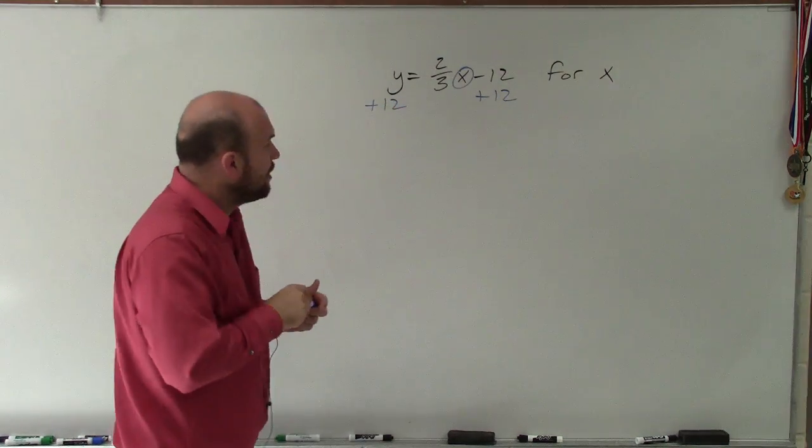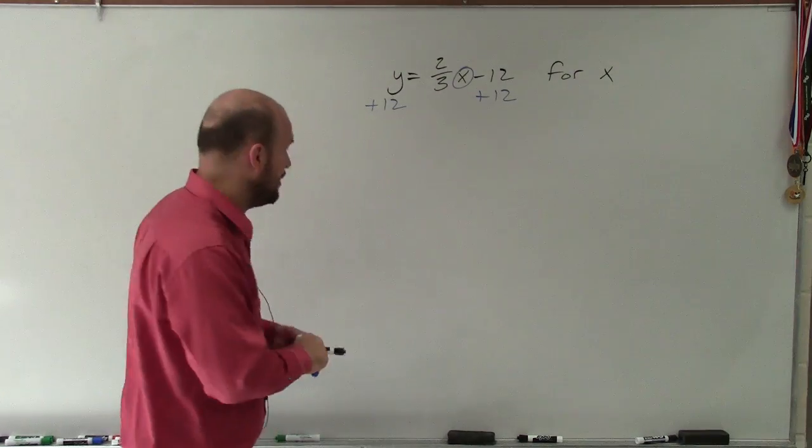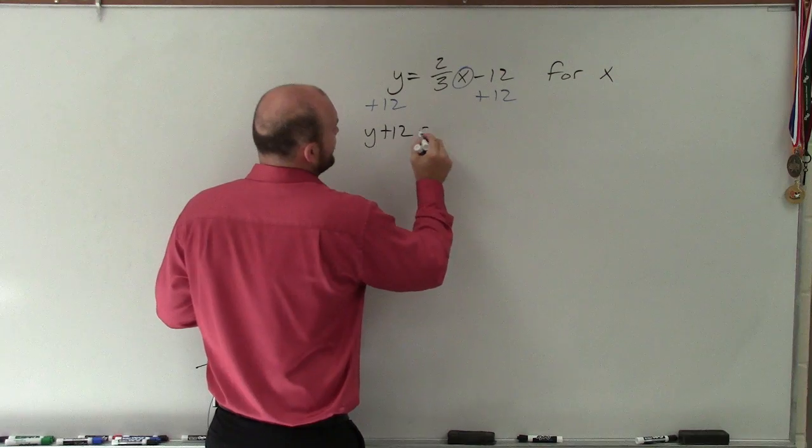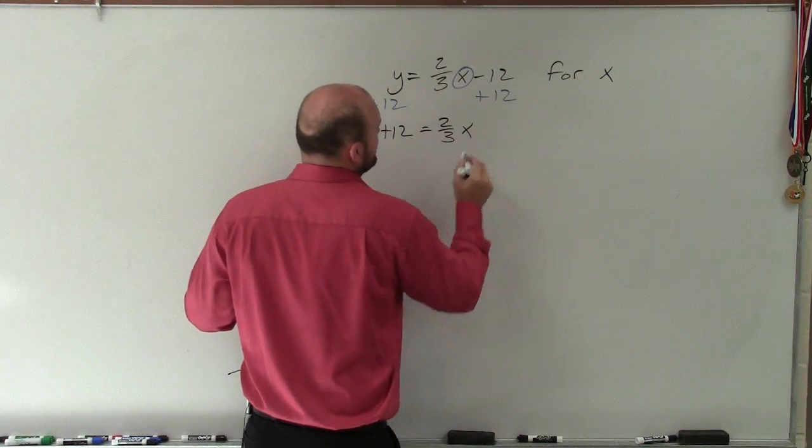Now I cannot add 12 to y because we don't know the value of y. So I'm simply going to have this rewritten as y plus 12 is equal to 2/3rds times x.